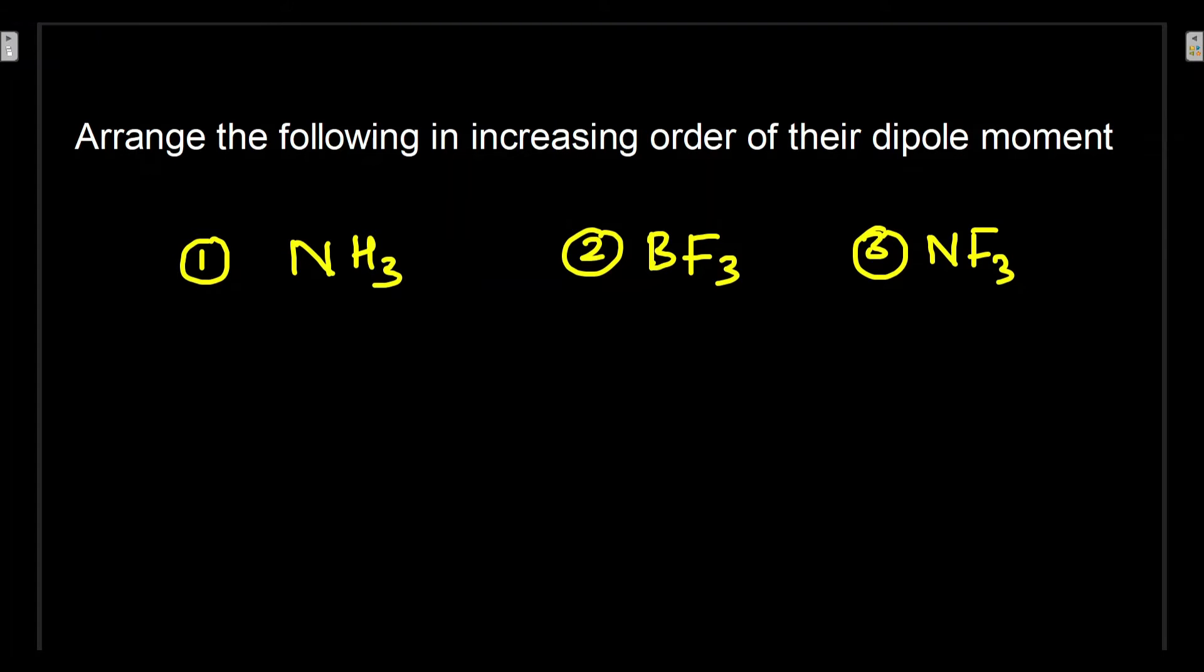The question here is arrange the following in increasing order of their dipole moment: 1) NH3 (ammonia), 2) BF3 (boron trifluoride), 3) NF3 (nitrogen trifluoride). To solve this question, first we will see some important points.